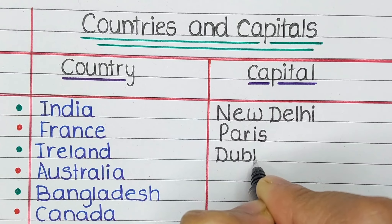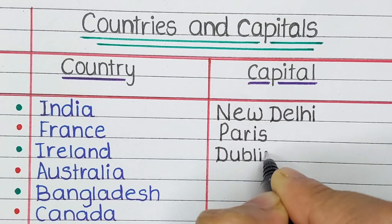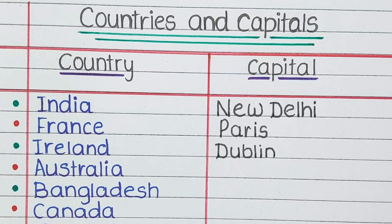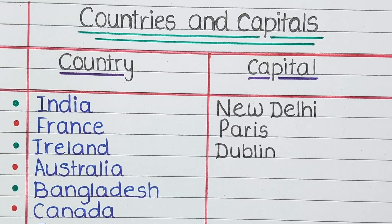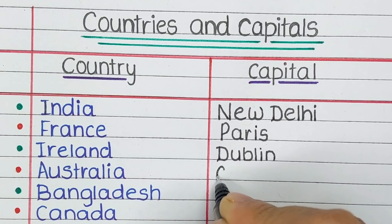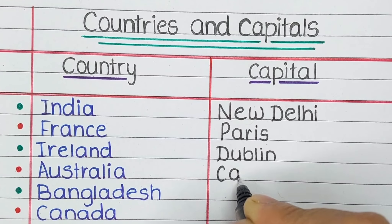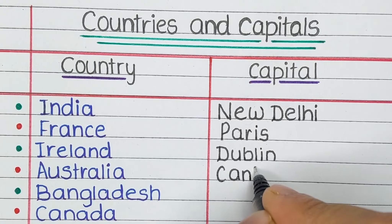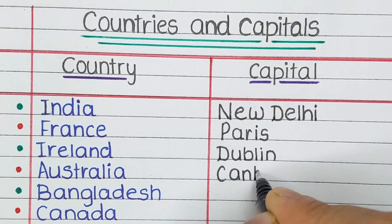First one is India. The capital of India is New Delhi. Next is France. The capital of France is Paris.